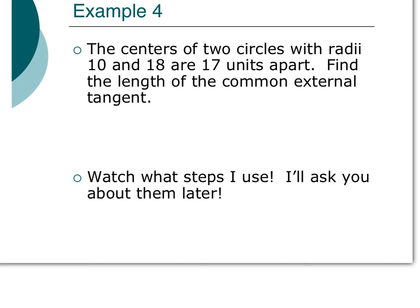Here we have the centers of two circles with radii 10 and 18, or 17 units apart. Find the length of the common external tangent. So, we're looking for that external tangent. I have two circles. We have this common external tangent. That's what we're trying to find. It says the centers of two circles with radii 10 and 18 are 17 units apart. So, this right here says 17 units apart.